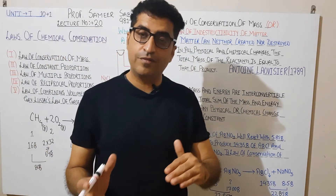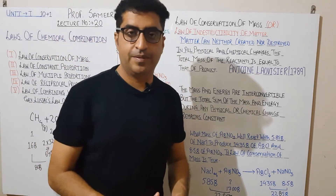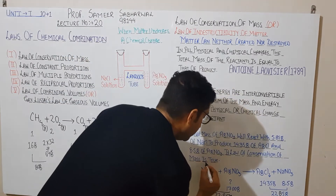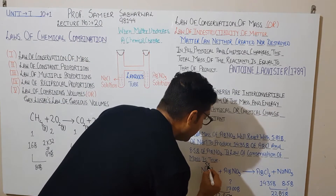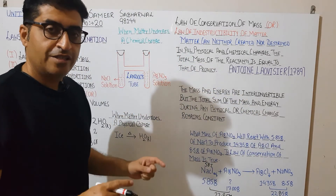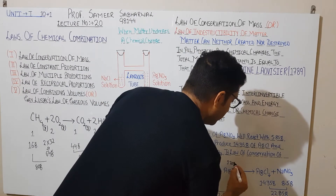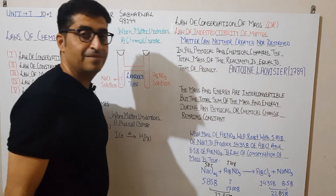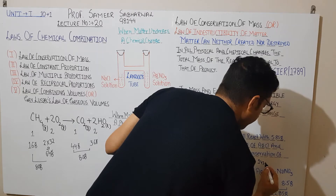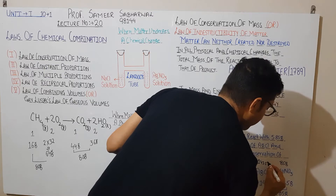Now let's look at the molar masses involved. The molar mass of NaCl is 58.5 grams per mole. The molar mass of silver nitrate (AgNO3) is 170 grams per mole. Silver chloride (AgCl) has a molar mass of 143.5 grams per mole, and sodium nitrate (NaNO3) has a molar mass of 85 grams per mole.